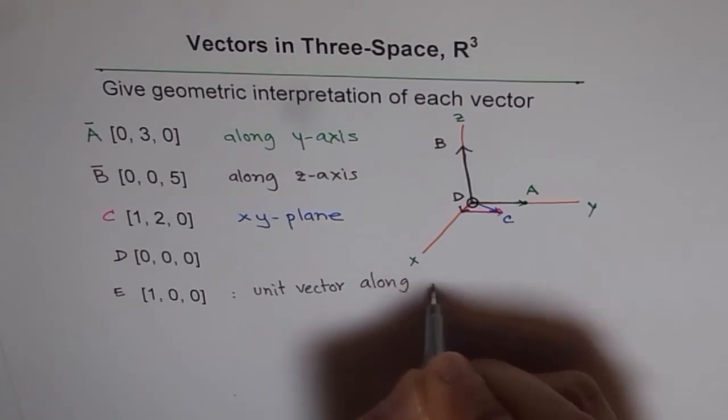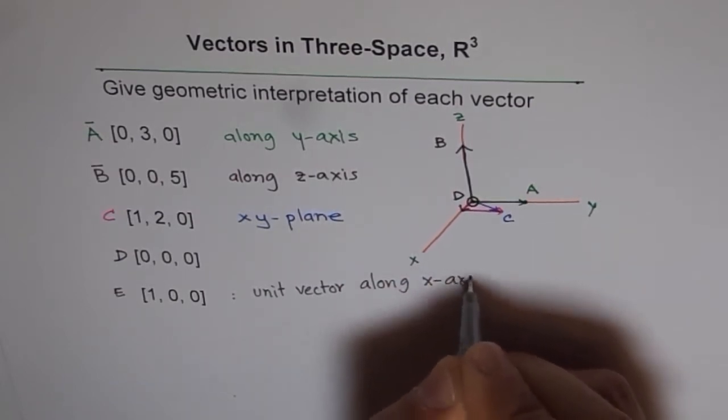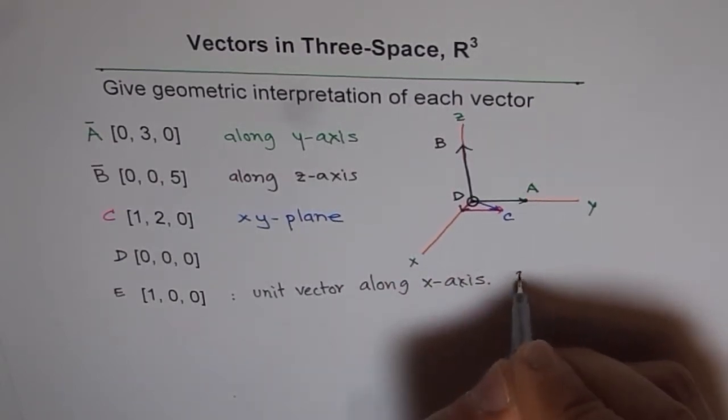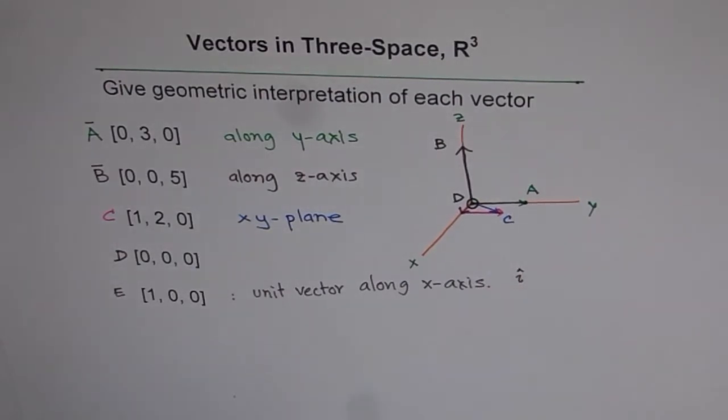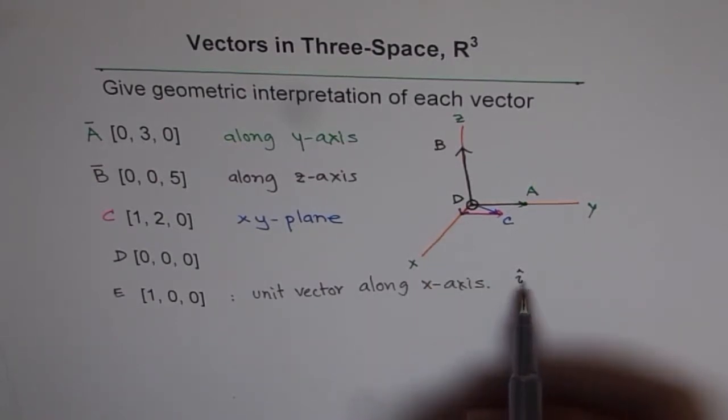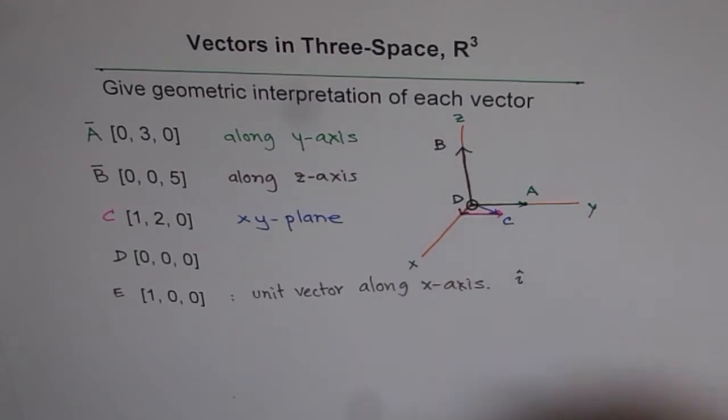It could also be written as i. In general, when we are talking about unit vectors along the axes, then along the x-axis it is i, along y it is j, and along z it is k.